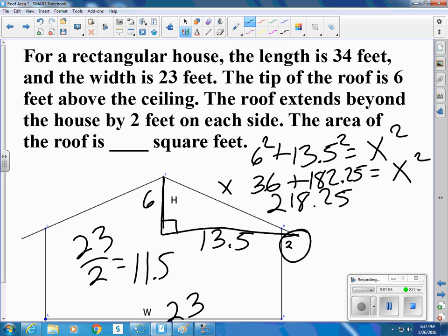If I add the 36 and the 182, that equals x squared. And then x equals the square root of 218. So that turns out to be 14.7 or 14.8 feet.